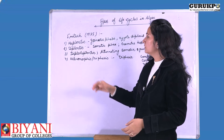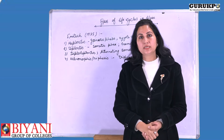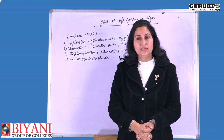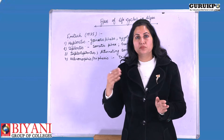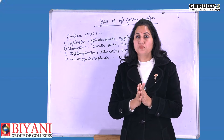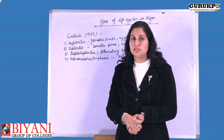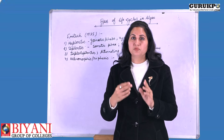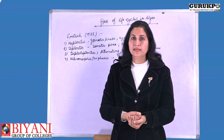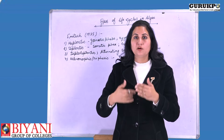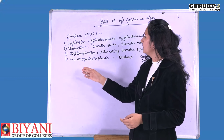Now we move ahead to the third type of life cycle, that is the diplo-haplontic life cycle. Here the diploid phase as well as the haploid phase are both found. In such a type of life cycle, two types of plants are found: one is the sporophytic plant and the other is the gametophytic plant, and they alternate with each other.